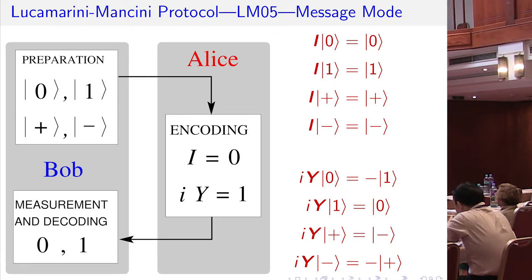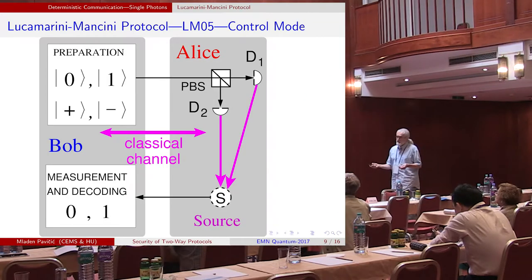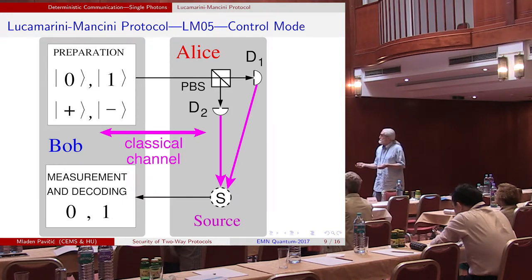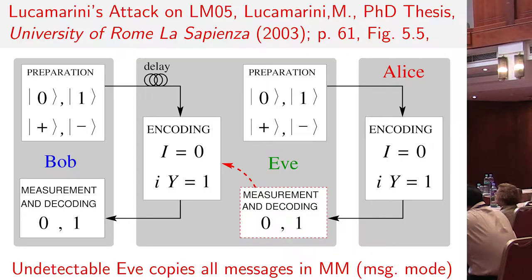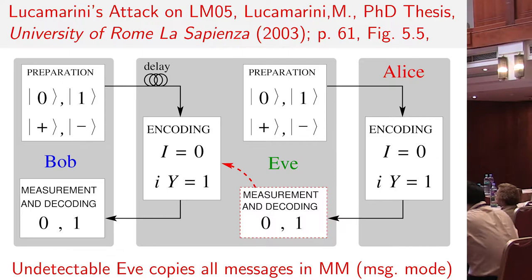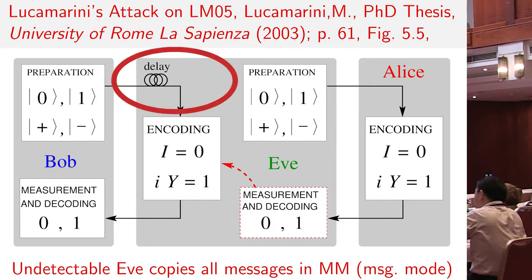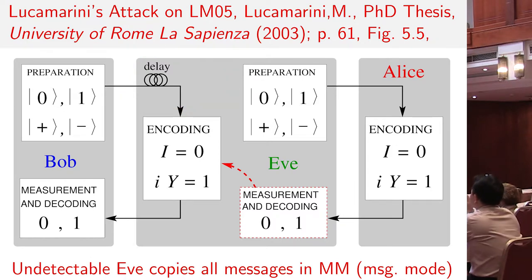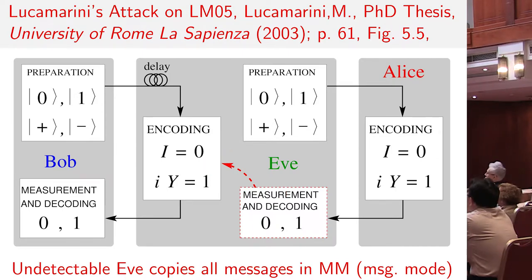Leaving the messages intact means message zero, and changing it into the opposite means message one. As in the ping-pong protocol, we have a control mode, but also here — as Luca Marini himself designed — Eve with her own sources can read all of Alice's encoding, encode the delayed Bob's photon, and send him Alice's messages. Again, it's completely undetectable in the message mode.